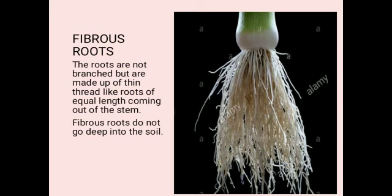Fibrous roots: The roots are not branched but are made up of thin thread-like roots of equal length coming out of the stem. Kethe ye roots branch mein nahi hoti, aur ye thin thread-like roots hoti hain jo stem mein se nikalti hain — inki equal length hoti hain. Fibrous roots do not go deep into the soil.